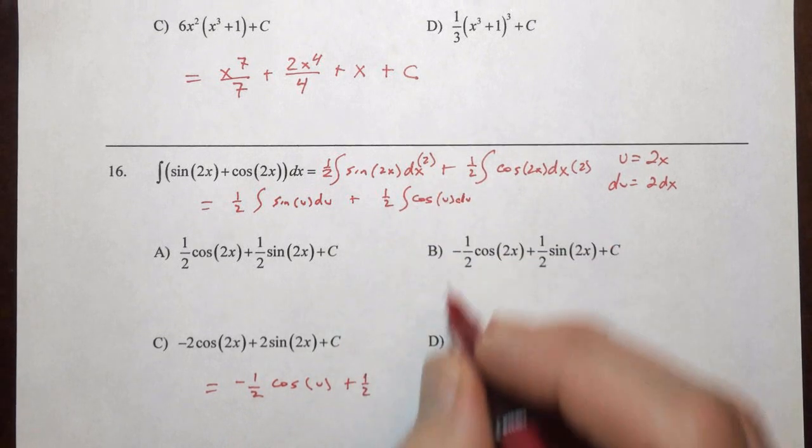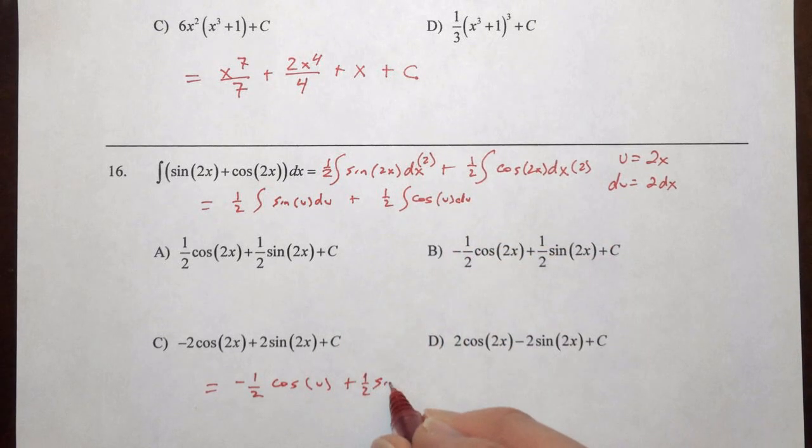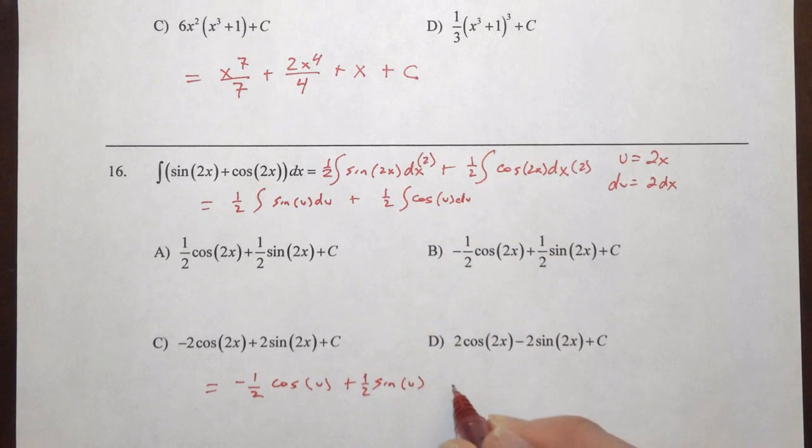and we have our 1 half, and then cosine's antiderivative is sine, so 1 half sine u, and now I'm going to put the two C's together and make 1.